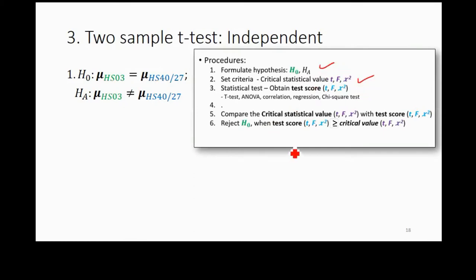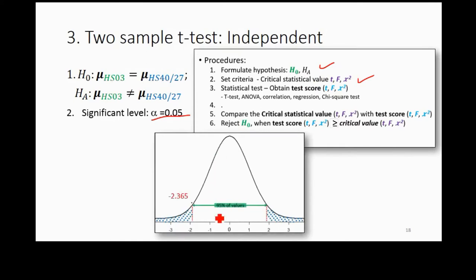The second step is to set the criteria — the critical statistical value. Before finding the critical value, you have to determine your alpha first. Your alpha depends on your test, so it's always good to sketch a curve. At this point you may not have the critical value yet, but you roughly know whether it's a one-tail or two-tail test, and you determine your alpha accordingly.